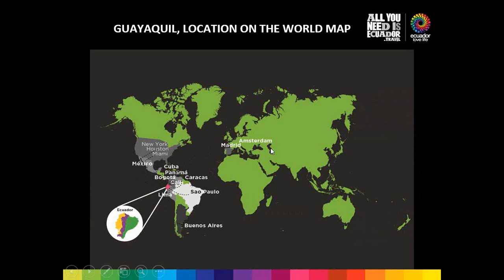We know the country of Ecuador is in South America, right at Latitude 0. On the screen you can see the relationship between our country and the geography of the region. We are surrounded to the north by Colombia and to the south by Peru. Right in the tropics at Latitude 0, you'll find the beautiful country of Ecuador.